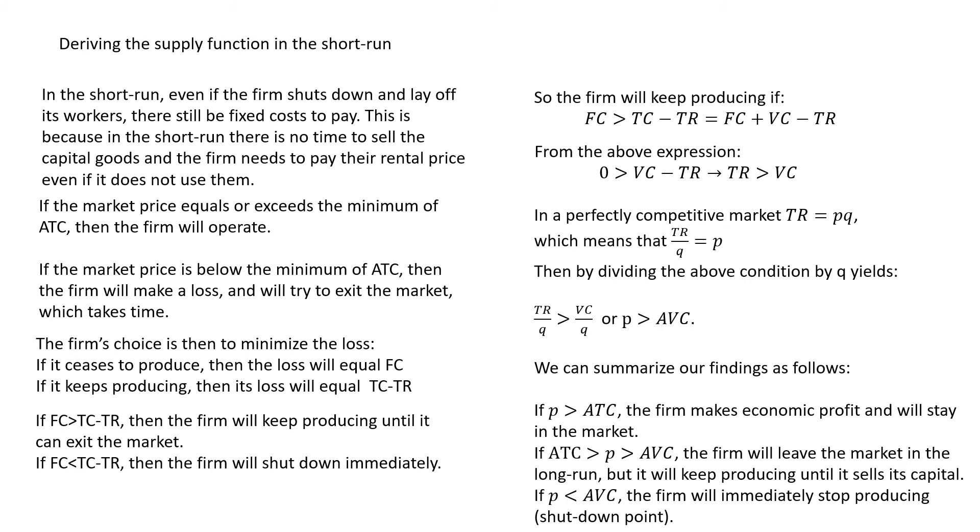So, summarizing all findings, if the market price is above ATC, the firm makes economic profit and will just keep producing in the market. The interesting two cases are the following. When the price is above the average variable cost, but below the average total cost, the firm will in the long run leave the market, but until that point, until the time when it can already sell its capital goods, it will still keep producing. If the price is below the average variable cost, then the firm will immediately stop producing and this is what we call the shutdown point for the firm.